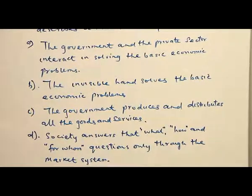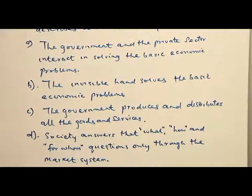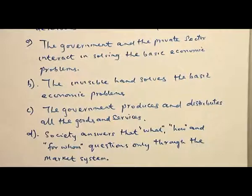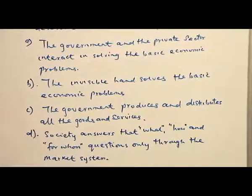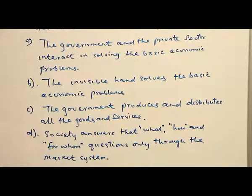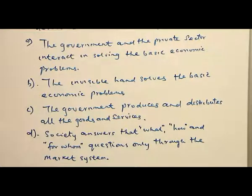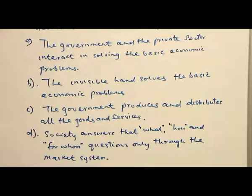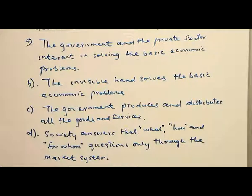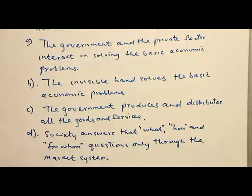The right answer is A — the government and the private sector interact in solving the basic economic problems. A is appropriate because in mixed economic system we are talking about private sector and public sector. B cannot be appropriate because the invisible hand implies capitalist economic system; in mixed economy we are not only talking about capitalists. C — the government produces and distributes all goods and services — is not specified as a mixed economy, it is more descriptive of a socialist system. D is talking about fundamental economic questions of capitalism, not the mixed economy.